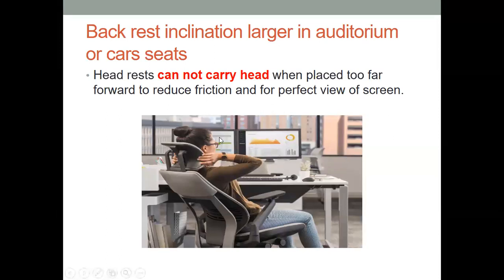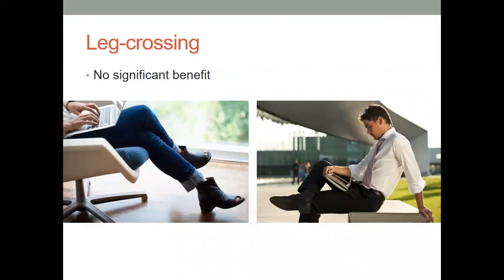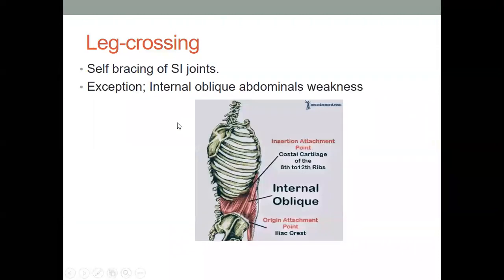We will also focus on the headrest. The headrest supports and carries your head. If the headrest is positioned too far forward, your back will not be stabilized properly. So proper positioning of the headrest is very important. In leg-crossing position, the SI joint is affected. Self-bracing of the SI joint is very important.